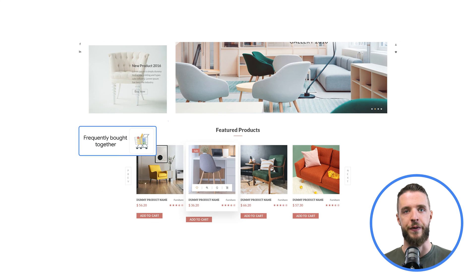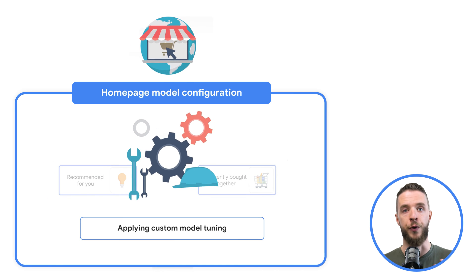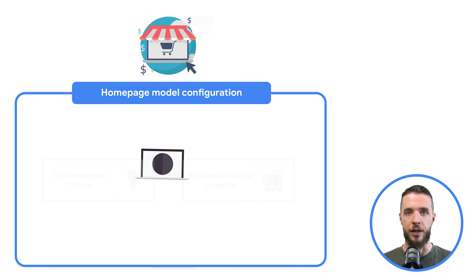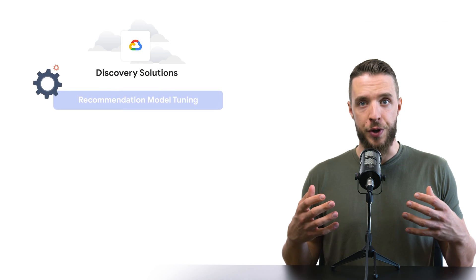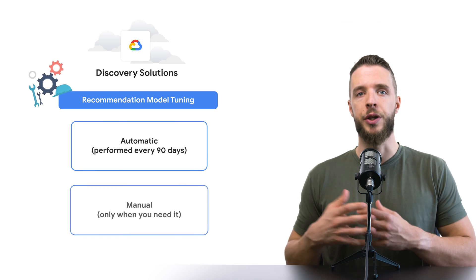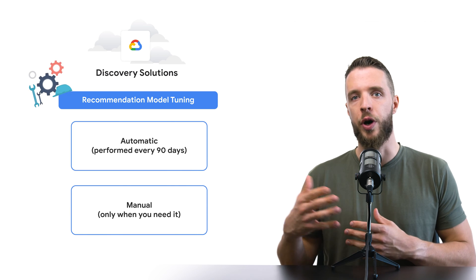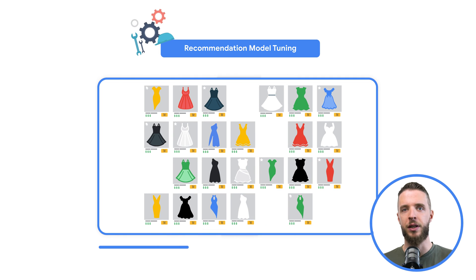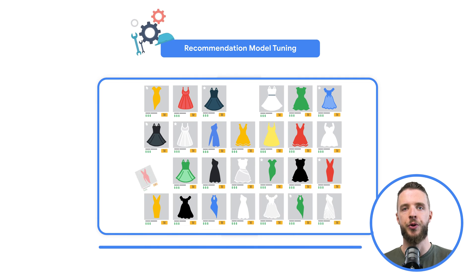Discovery Solutions enable you to specify additional model configuration options to adjust the behavior of your model. For example, you may select a tuning preference that is most suitable to your website and business goals. Model tuning can be automatic, performed every 90 days, or you may manually tune your model only when there is a significant change in your catalog or events. Tuning keeps the model training optimal to automatically adapt to changes in your input data and customer shopping behavior throughout the year.